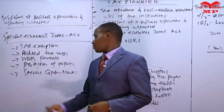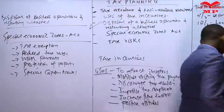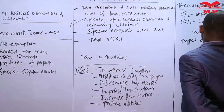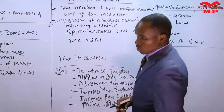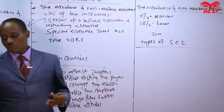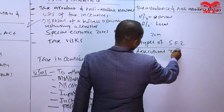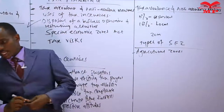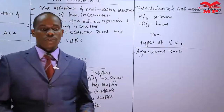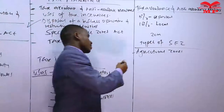Let's highlight some examples of the types of special economic zones in a country like Kenya. We have a number of special economic zones including, for instance, agricultural zones. Agricultural zones are meant to ensure that the agricultural sector is improved and that we attract many people into farming so that we can boost food production in our country.